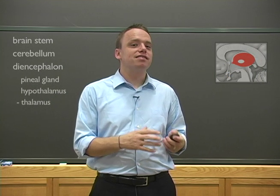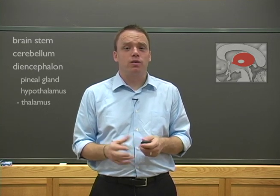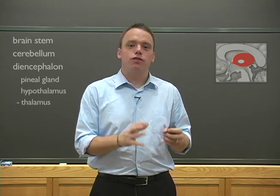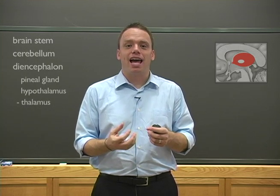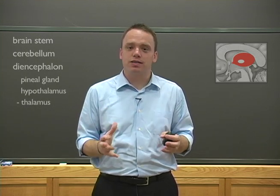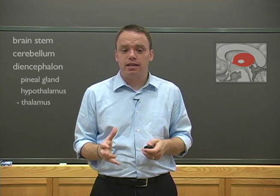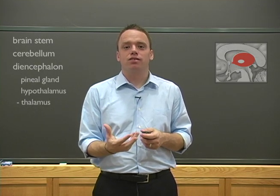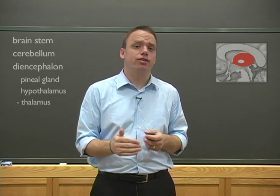Specifically, all sensory information coming into the brain, with the exception of smell, first is routed to the thalamus, processed, and then sent to the right areas of the cerebrum for further processing. So in this way, the thalamus serves as a gatekeeper for information to the rest of the cerebrum.